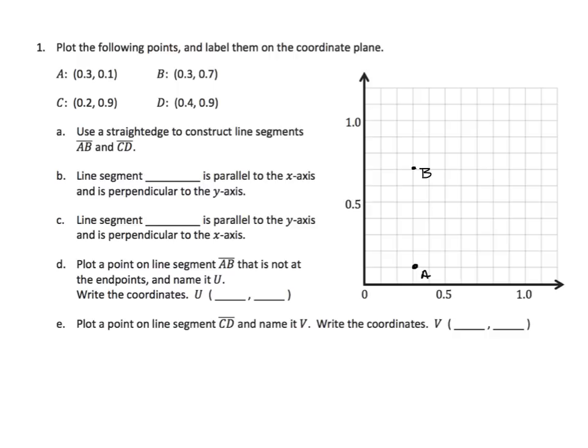C is 2 tenths and 9 tenths. So we have 2 tenths and 9 tenths, and we'll label that C. And D is 4 tenths and 9 tenths. So we go to the x-axis, 4 tenths, and 9 tenths for our point D.